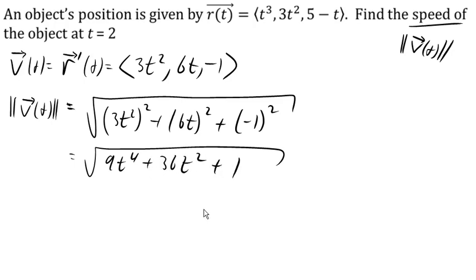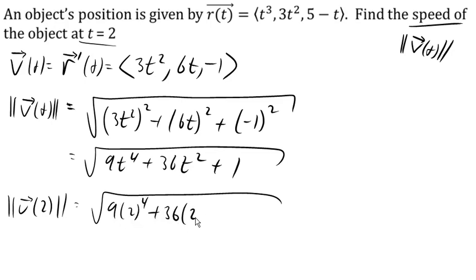And there is our magnitude of velocity. If we need the magnitude at t equals 2, we can then plug in 2 for t. To find our velocity, which turns out to be square root of 289, which is 17. So the speed at time 2 is 17, whatever our units are, perhaps meters per second, or something like that.